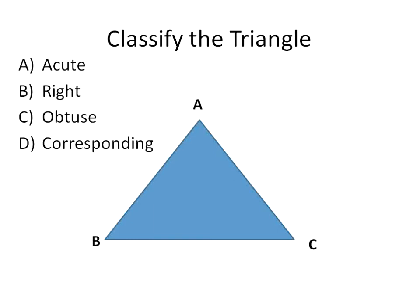So now we're going to go through and classify these triangles. You can select A, B, C, or D — this is like your test for the day. Classify this triangle: is it an acute triangle, a right triangle, an obtuse triangle, or a corresponding angle? Without having the labels on this triangle it makes it a little bit tougher, but this one here is an acute triangle — none of the angles are exactly 90 degrees and none of them are larger than 90 degrees.